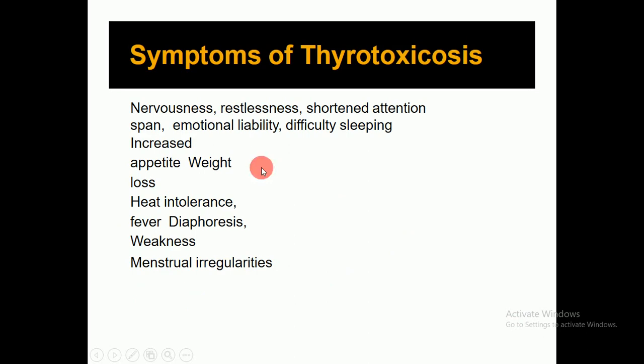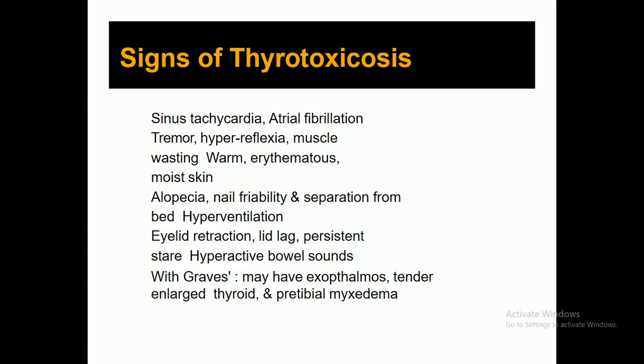Symptoms of thyrotoxicosis include nervousness, restlessness, short attention span, emotional lability, difficulty sleeping, increased appetite, weight loss, heat intolerance, fever, polyuria, weakness, and menstrual irregularity in females. Signs include sinus tachycardia, atrial fibrillation, tremor, hyperreflexia, muscle wasting, warm erythematous moist skin, alopecia, nail friability, hyperventilation, eyelid retraction, lid lag, hyperactive bowel sounds, and with Graves' disease: exophthalmos, tender enlarged thyroid, and pretibial myxedema.